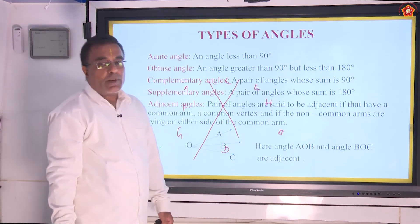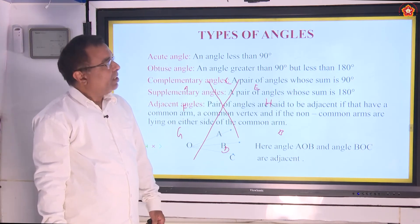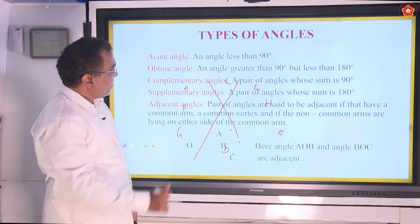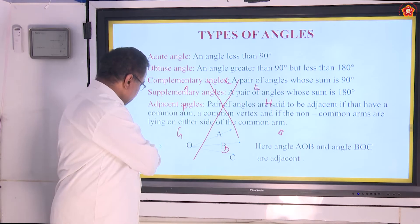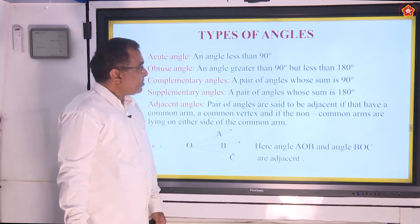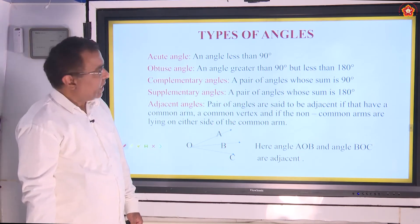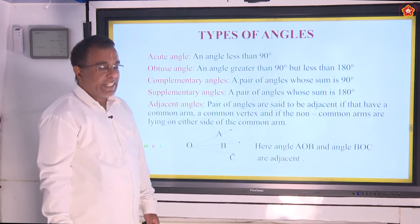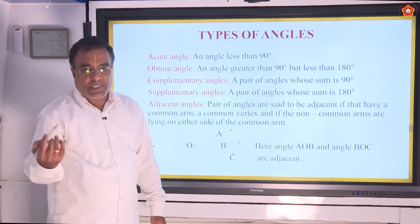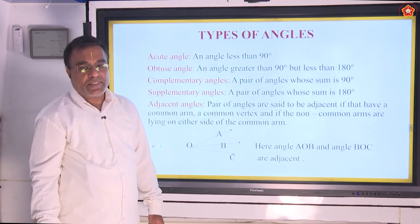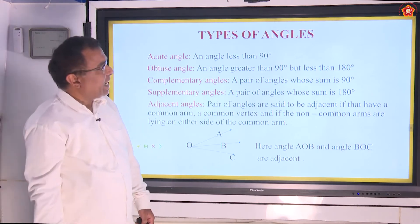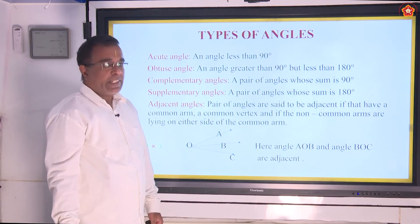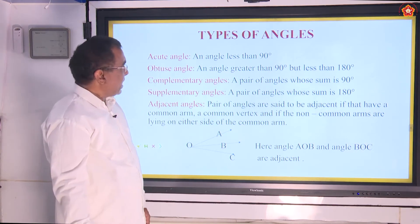We shall discuss about some important types of angles. We have different types of angles — let us learn one after another. Acute angle: what is an acute angle? If an angle is less than 90 degrees — it can be 30 degrees, 45 degrees, 58 degrees like that — whenever the angle made by the two rays is going to be less than 90 degrees, we call that as an acute angle.